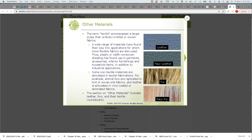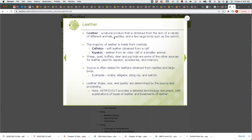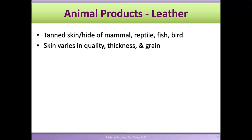We talked about leather and fur, and also faux leather and faux fur — nowadays we can make products that resemble leather or fur out of synthetic materials. Leather is a natural product obtained from the skin of animals, and the majority is made from cowhide. We call it a hide when using animal skin — those can be mammals, reptiles, fish, or birds — and it goes through a tanning process.